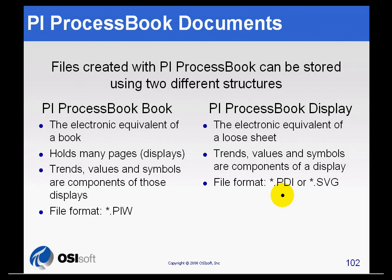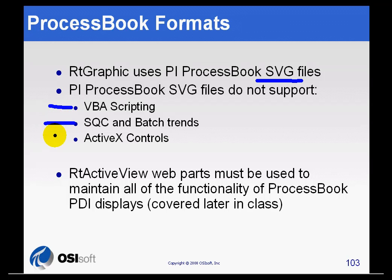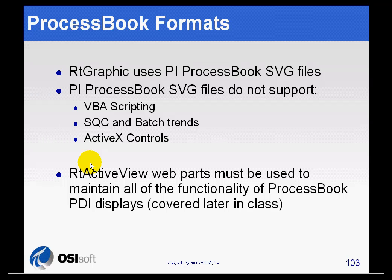When we talk about moving this to the web, we are talking about using PDIs and exporting them as SVGs — so it is just the display equivalent. Process Book does support SVG as one of its native save formats. However, when saving as SVG, we do not support Visual Basic scripting, we currently do not support SQC and Batch Trends, and you cannot use ActiveX controls. Process Book itself is an ActiveX control container, but not when you bring it into the RT Graphic web part.